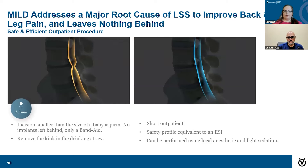The MILD procedure addresses the root cause of the lumbar spinal stenosis, which is the narrowing of the spine. It's designed to treat the leg pain and improve your ability to stand longer. We can do this procedure with a small incision, going in with a pencil-size tool to clean out that thickened ligament and remove that kink. It's a very short outpatient procedure with a very high safety profile, done with just a little numbing medicine and some light sedation.